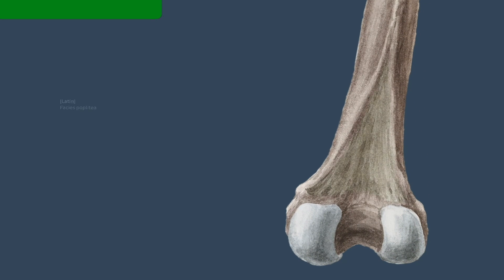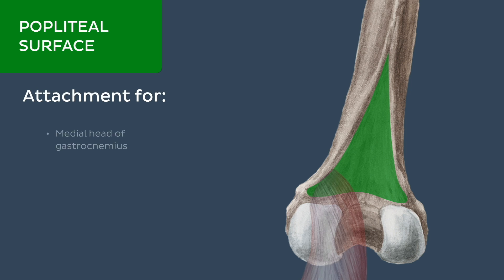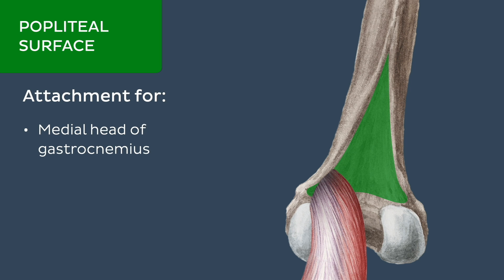The popliteal surface of the femur is the smooth triangular area between the medial and lateral supracondylar lines. It contributes to the floor of the popliteal fossa and functions as an attachment site for the medial head of the gastrocnemius muscle.